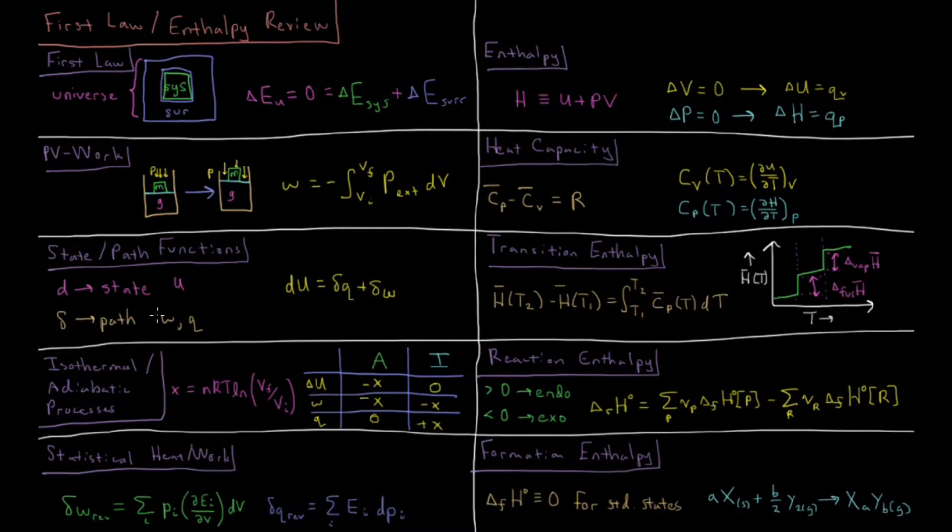Path functions work and heat are both path functions and they do depend upon the path which is taken during a system change. The state alone is not enough to specify work and heat. Those values are energy changes which occur along a specific path.